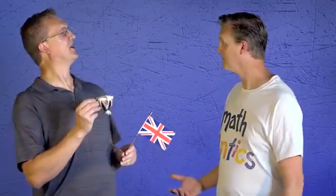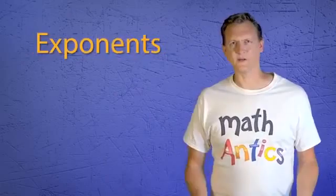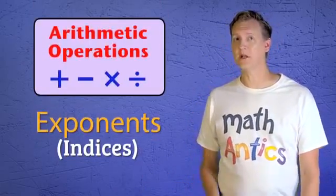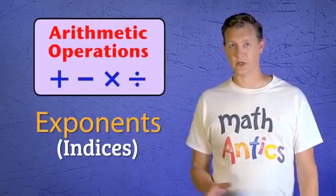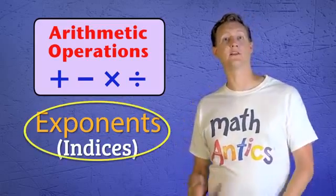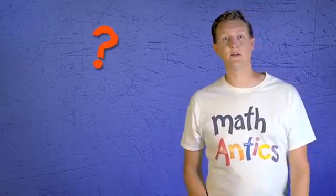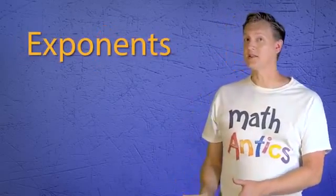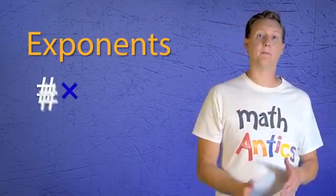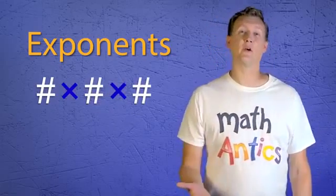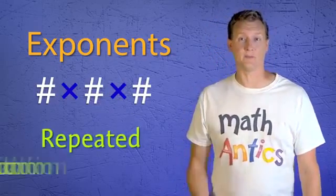Sound good to you? Jolly good sir, toodle pip! Alright then, but what are exponents or indices? Well, just like the four main arithmetic operations that we use in math, exponents are a type of math operation. They tell us what to do with numbers. But what do they tell us to do? Exponents tell us to take a number and multiply it by itself a certain number of times. In other words, exponents are basically repeated multiplication.